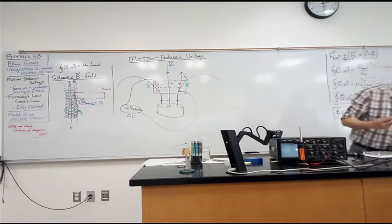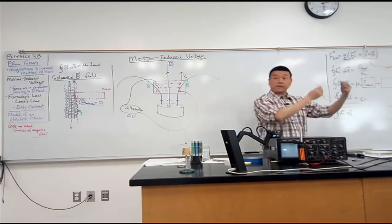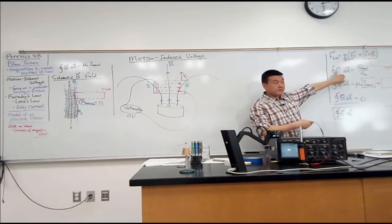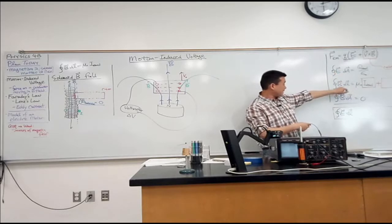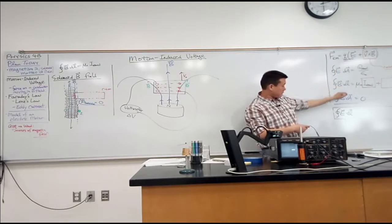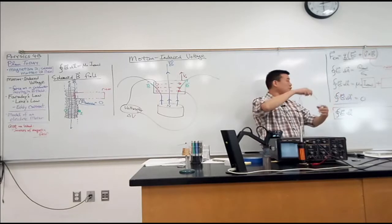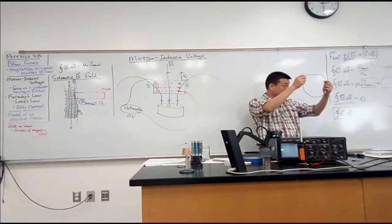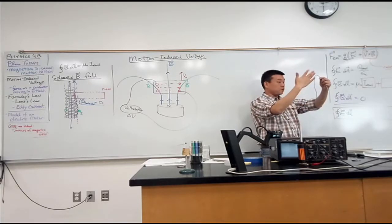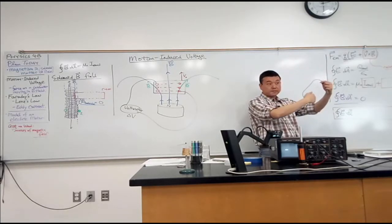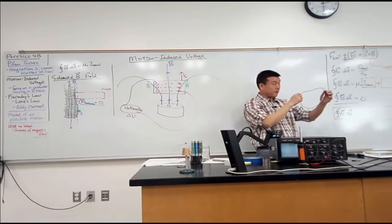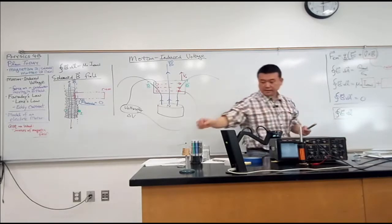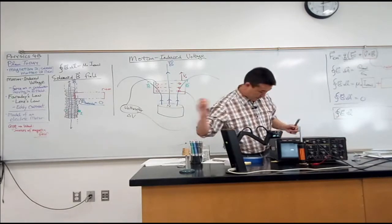Surface that's enclosed by this loop. So once you have a surface, then you can define a flux. So that's how we did it for electric flux here. So we can do the same thing for magnetic field. So with this loop that we have for Faraday's loop, with this closed loop, you can define a surface. So you can look at magnetic field going through the surface, and calculate the magnetic flux.